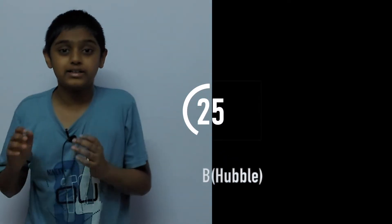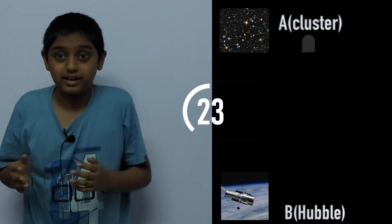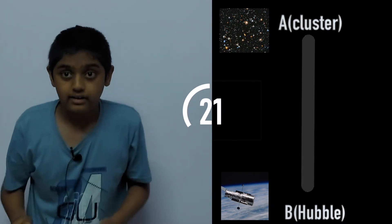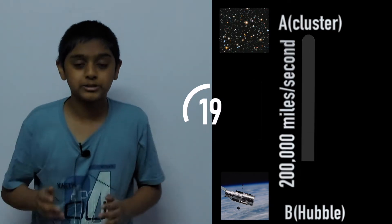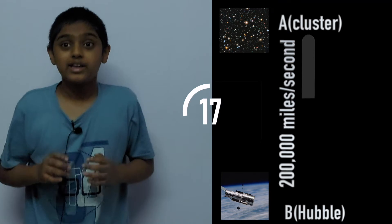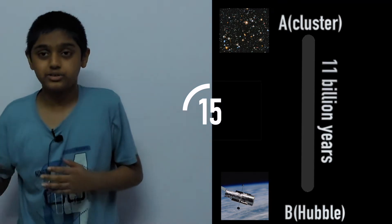Around 11 billion years ago, the cluster emitted some light rays, as on any normal day. With light travelling at 200,000 miles per second, we can infer that it took 11 billion years for those light rays to reach Hubble's camera.